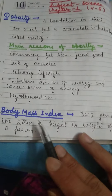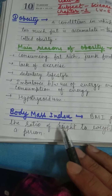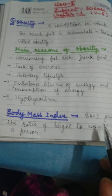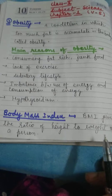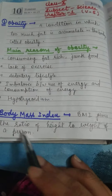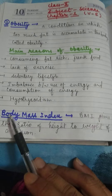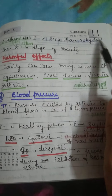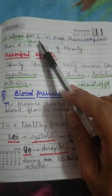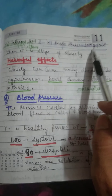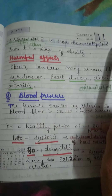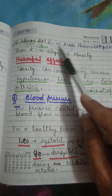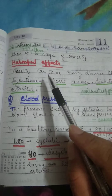The next topic is body mass index, BMI in short. BMI is a ratio of a person's weight to height. If this ratio is more than 30 kg per meter square, then it is considered a stage of obesity. I hope you all understand.